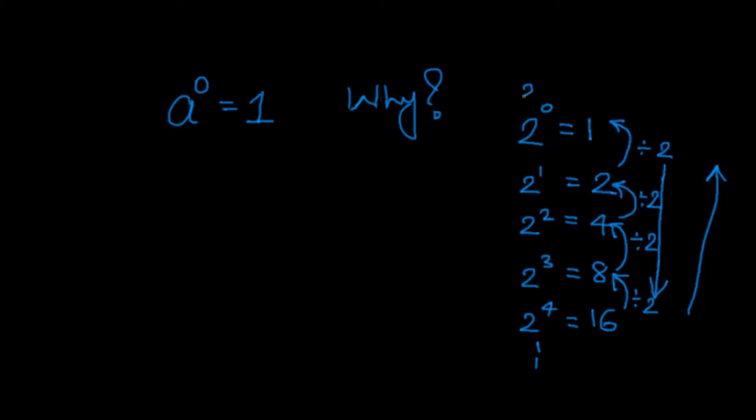Let's check for 2 to the power minus 1 then. We all know that 2 to the power minus 1 is nothing but 1 by 2. But let's check whether it follows our sequence. So I have already got 1 here. When I divide it by 2, I'll get 1 by 2.